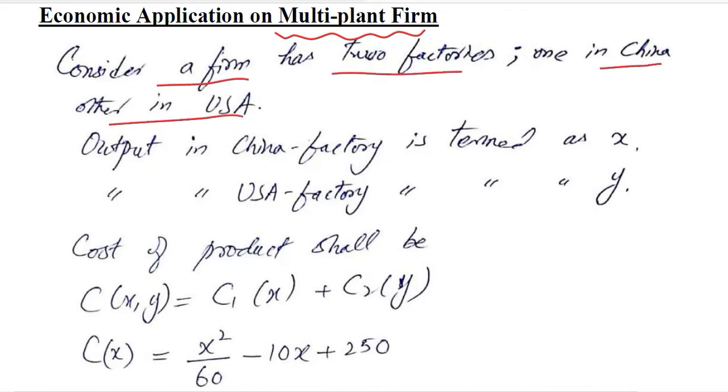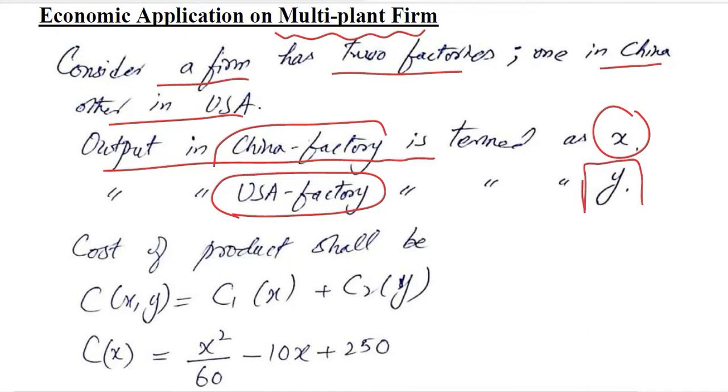The output produced in the China factory is considered as X, and the output produced in the USA factory is considered as Y. The cost of production shall be equal to the cost incurred in one factory plus the cost incurred in the other factory. This is the cost incurred in the China factory, and this is the cost incurred in the USA factory.